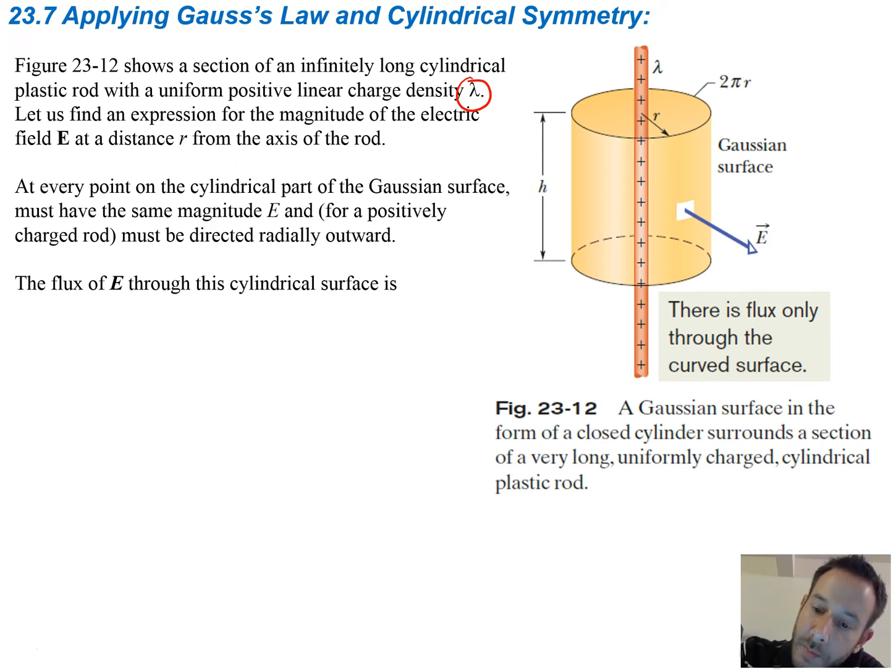If we're trying to find the electric field at a distance r away, which is shown here, we're going to create our Gaussian surface around this line of charge, and the electric field E is going to be the same at every point on the surface, as it's equidistant away from the charge.